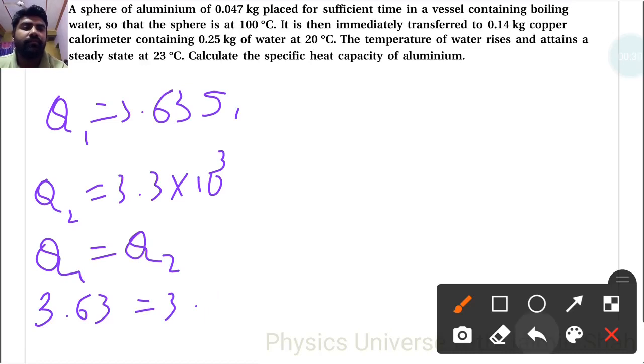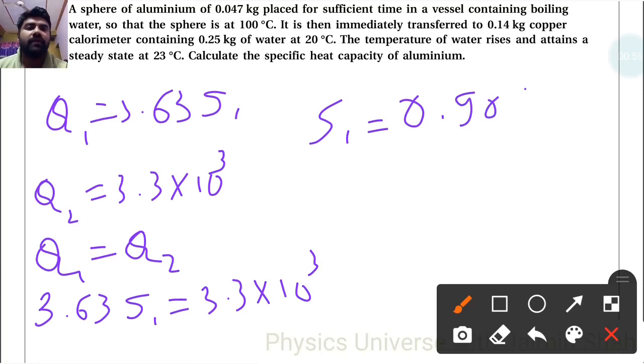3.63 times S1 equals 3.3 times 10³. So S1 equals 3.3 times 10³ divided by 3.63. This is the specific heat capacity of aluminum.